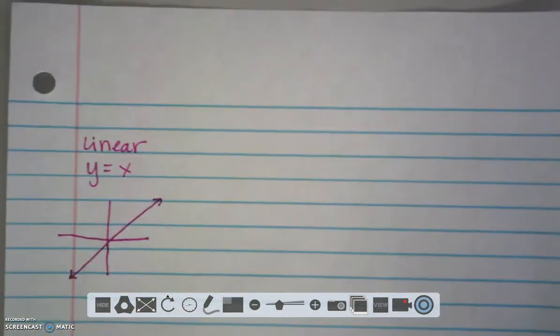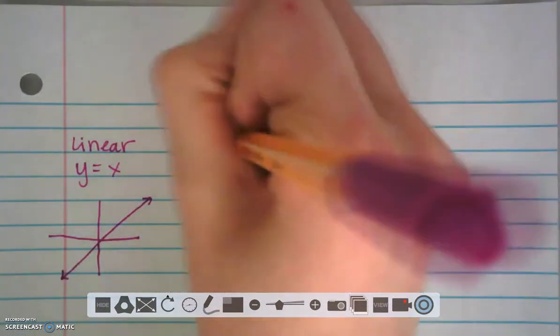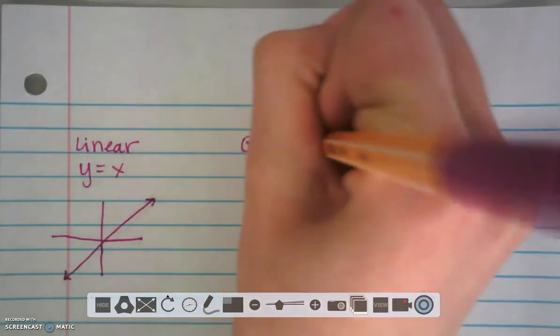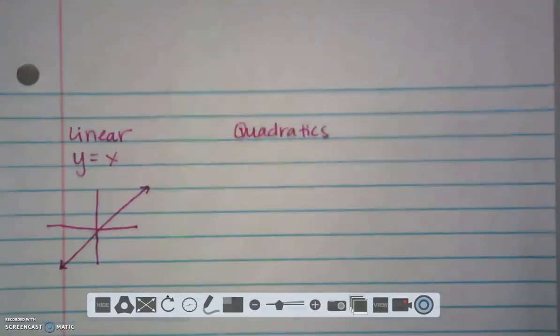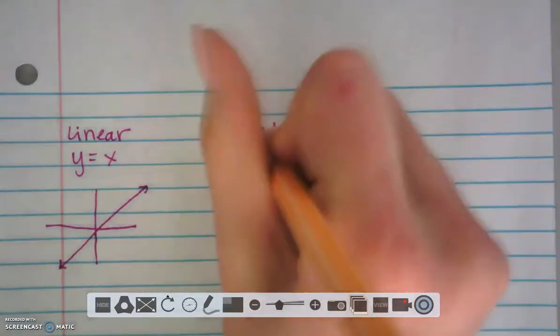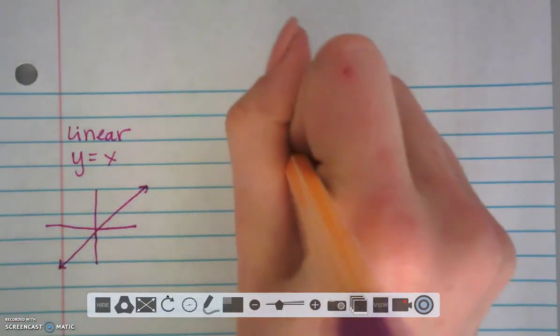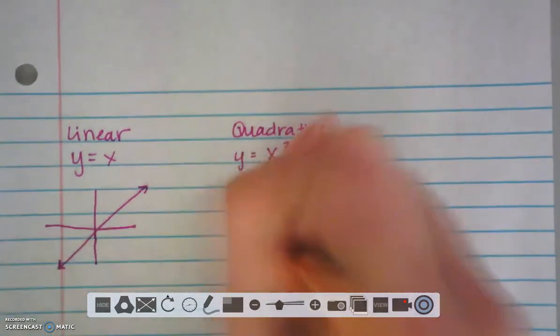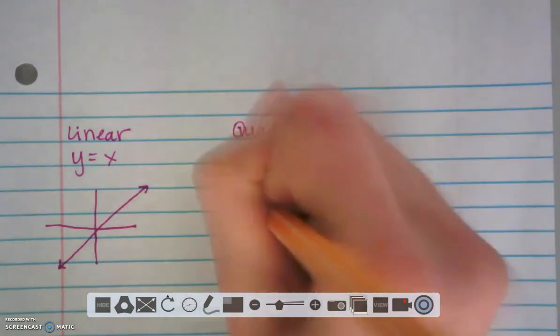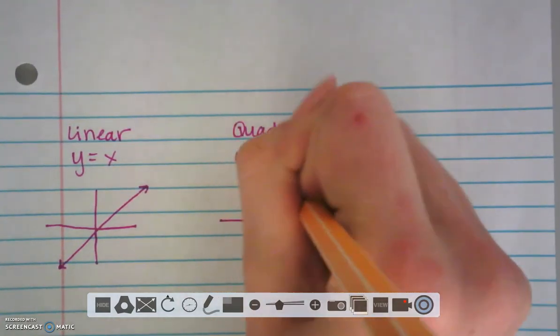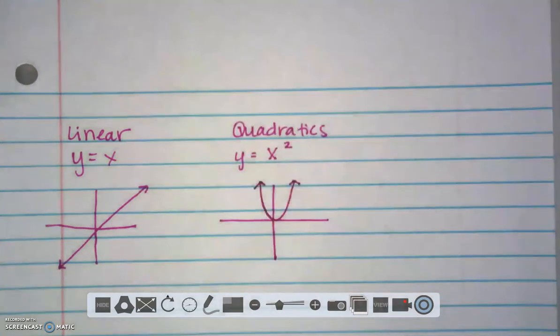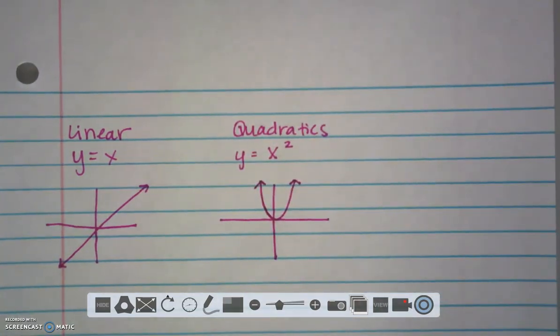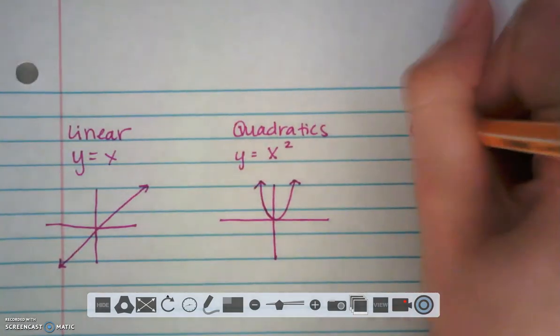We just finished our lesson on quadratics and quadratics parent function is x squared. And we know that is a u-shaped curve called a parabola that's centered at the origin. We're now going to talk about our last function for this semester. It's an exponential function.